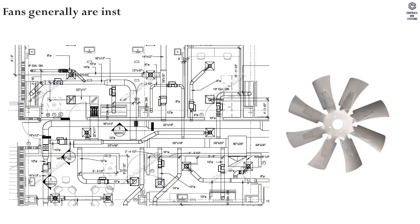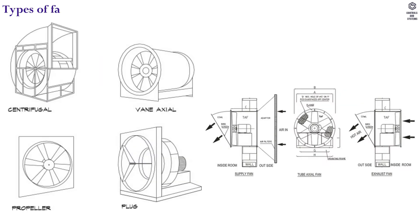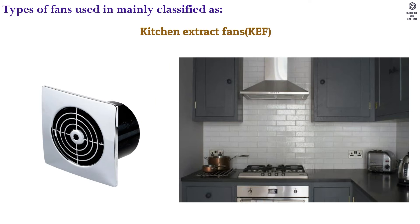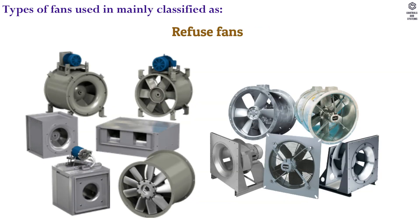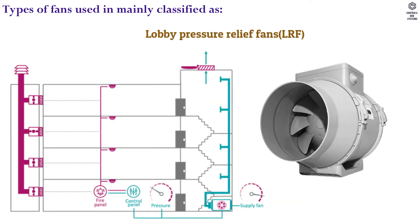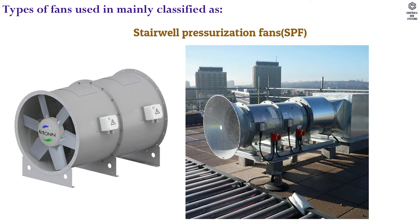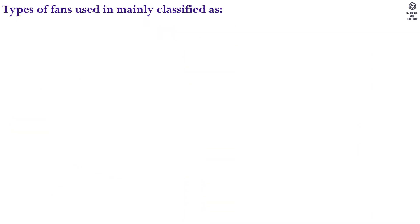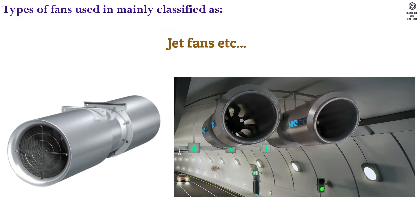Fans are generally installed in locations shown in drawings. Types of fans used are mainly classified as: toilet extract fans, kitchen extract fans, refuse fan, lobby pressure relief fans, stairwell pressurization fans, car park exhaust fans, and jet fans, etc.